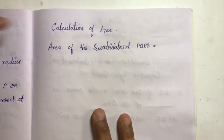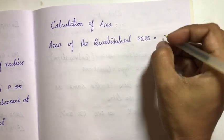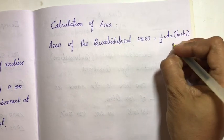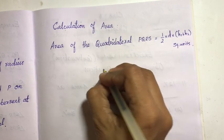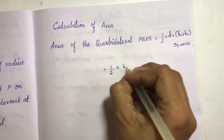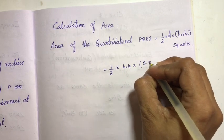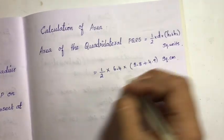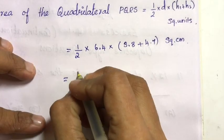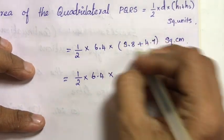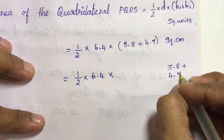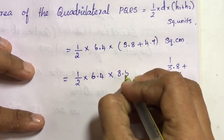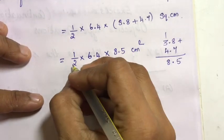Area calculation: Area of quadrilateral PQRS equals formula one-half into d into (h1 plus h2) square units. That is equal to half into 6.4 into (3.8 plus 4.7) cm squared. That is equal to one-half into 6.4 into 8.5, which gives the area in square centimeters.